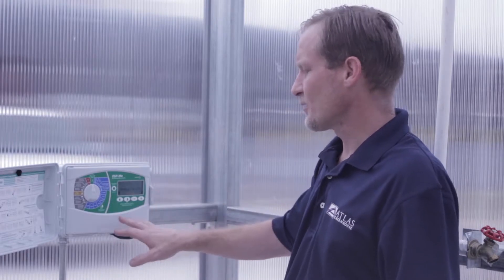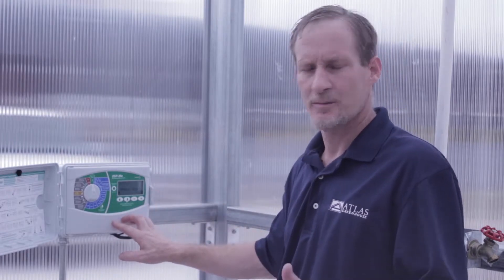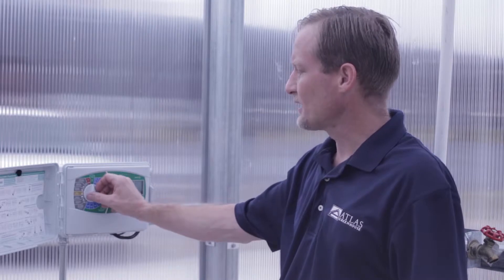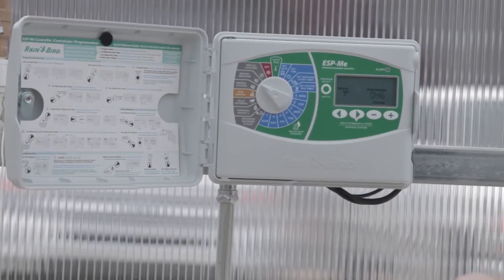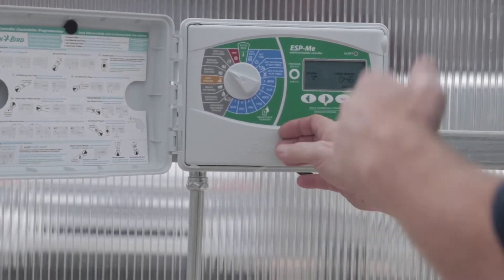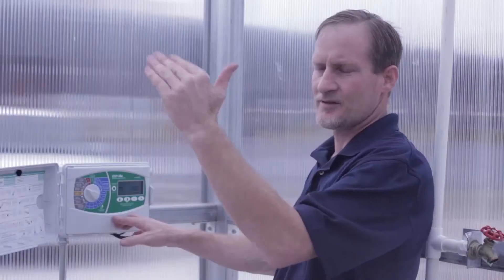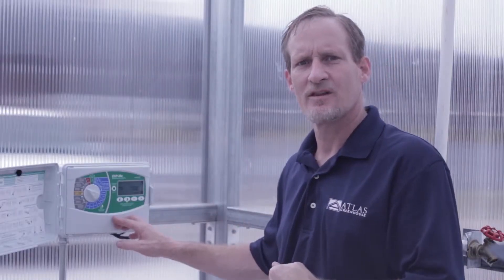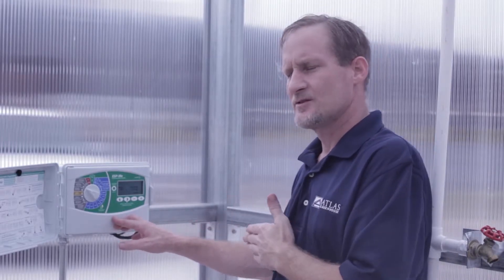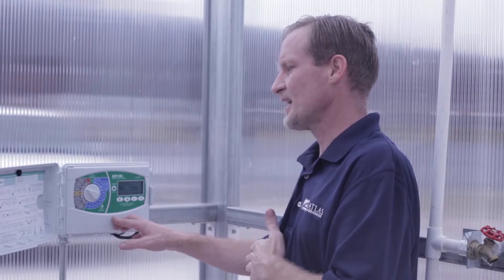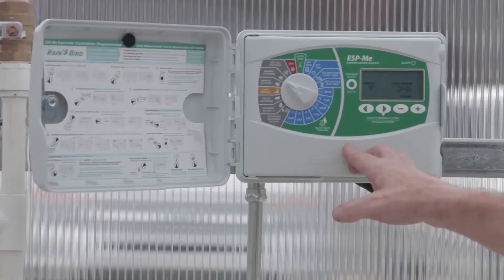All of your controls, whether it be the Rainbird or the Sterling or some other brand, have a manual operation system. You can turn your control to the manual program, then you're going to manually turn on your different solenoids to check to verify whether they're working properly. Follow your manufacturer's specifications and directions on how to do this because each controller is different.